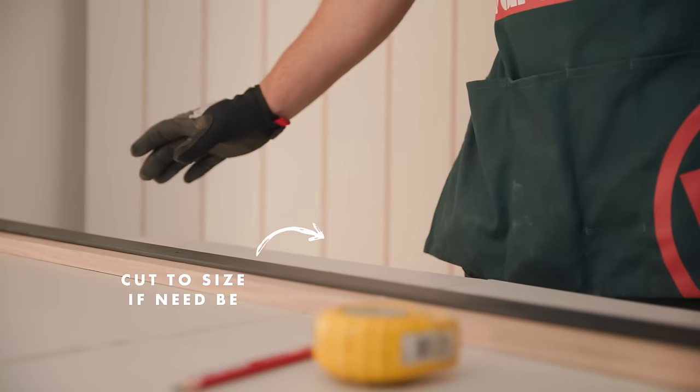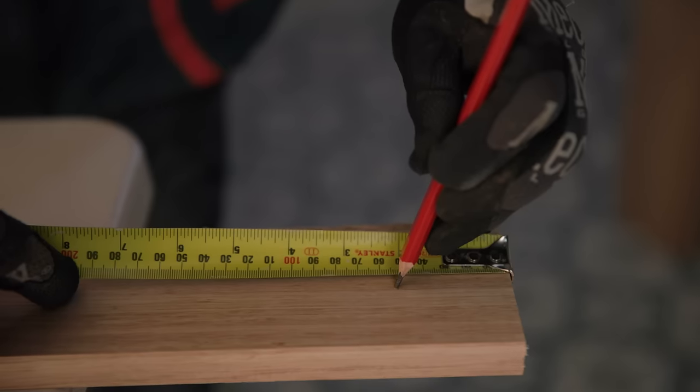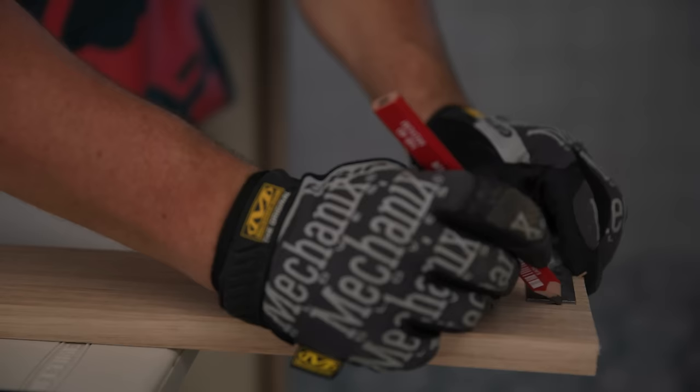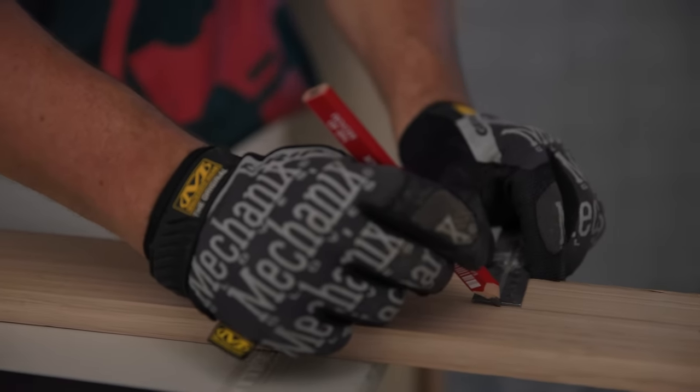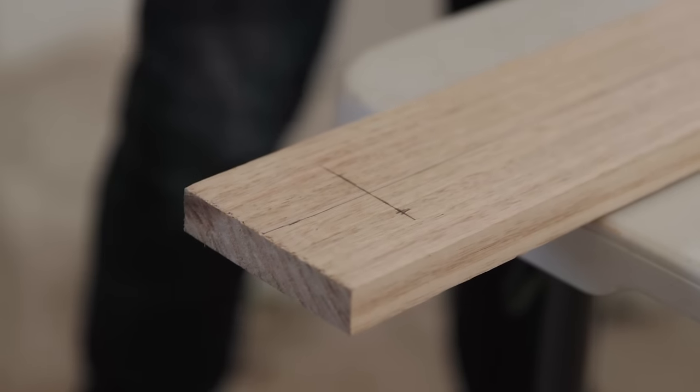We're going to be using a mounting board. The mounting board should be the length of the track plus 50 millimeters at either end. Measure and mark the center of the board on both ends, then draw the center line. Then center the track on the board and mark the track start location on each end.